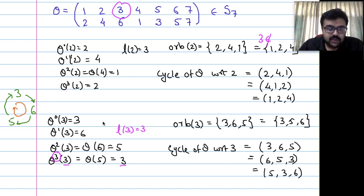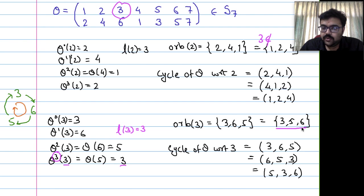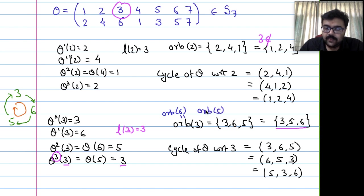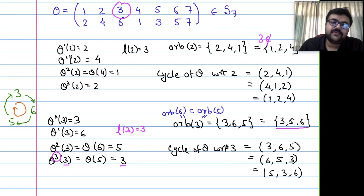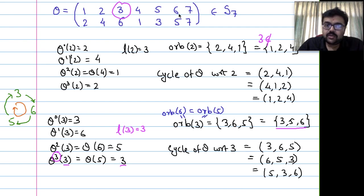Now 7 is not covered. Orbit of 6 and orbit of 5 are the same as orbit of 3. What about 7? If I take theta^0(7) = 7, and theta(7) = 7. So the cycle corresponding to 7 is just (7) — a singleton. The orbit of 7 = {7} and its length L = 1.